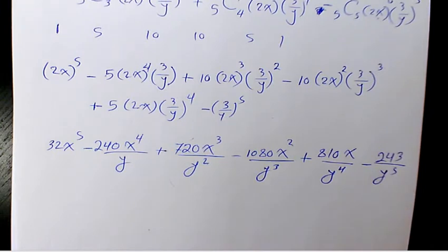That's going to be the expanded form of 2x minus 3 over y to the power of 5. I hope you enjoyed this video. Please leave me a comment if you have any question. Please don't forget to subscribe to this channel. You can have access to many other videos regarding binomial expansion and other topics in math, physics, and chemistry. Thank you for watching and have a great day.